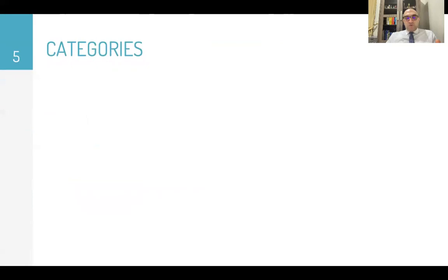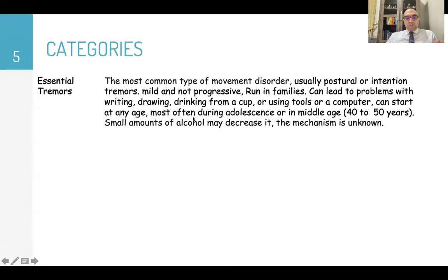Essential tremor is the most common type of movement disorder, usually postural or intention tremor. It is mild and not progressive and usually runs in families. It can lead to problems during writing, drawing, drinking from a cup, or using a computer or tools. It can start at any age, usually in adolescence or middle-aged men. A small amount of alcohol can decrease or make it disappear, and the mechanism is unknown.